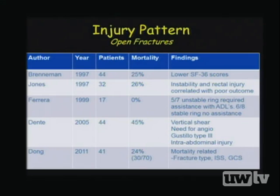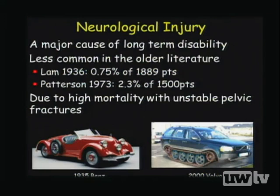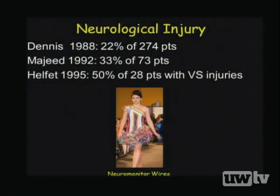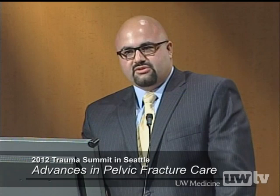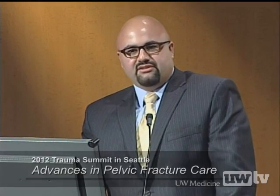Regarding neurological injury, early reported incidence was very low, likely because many patients did not survive. More recently, Majeed's series of 73 patients found abnormal EMGs in 33%, half of whom had normal neurological exams. Helvet found abnormal SEPs and lumboplexopathy in 50% of vertical shear injury patients. However, retrospective assessment of neurological injury is difficult due to inter- and intra-observer variability in neurological exams, and associated injuries complicate examination.